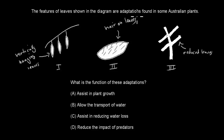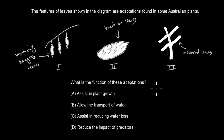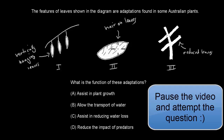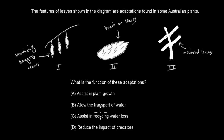Next: Leaf features shown in the diagram are adaptations found in some Australian plants: vertical hanging leaves, hair on leaves, and reduced leaves. What is the function of these adaptations? A: Assist in plant growth. B: Allow transport of water. C: Assist in reducing water loss. D: Reduce the impact of predators. The correct answer is C. Vertical hanging leaves reduce sun exposure, limiting water loss. Hairs on leaves block water from leaving. Reduced leaves mean less surface area for water loss overall.